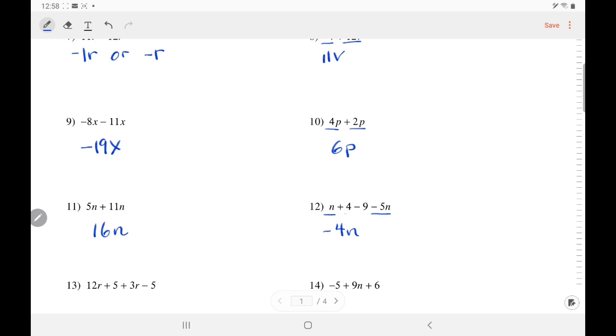Over here, 4 minus 9. Use the rule again. You're trying to add a positive 4 and a negative 9. So, we take the sign of the stronger number 9, which is negative, and we subtract. 9 minus 4 is 5.